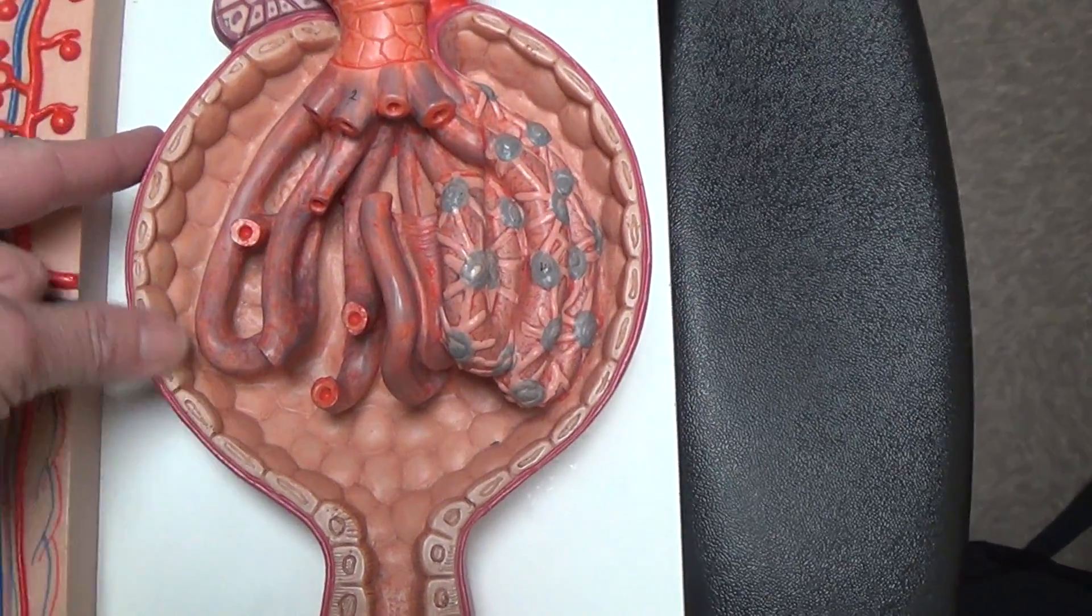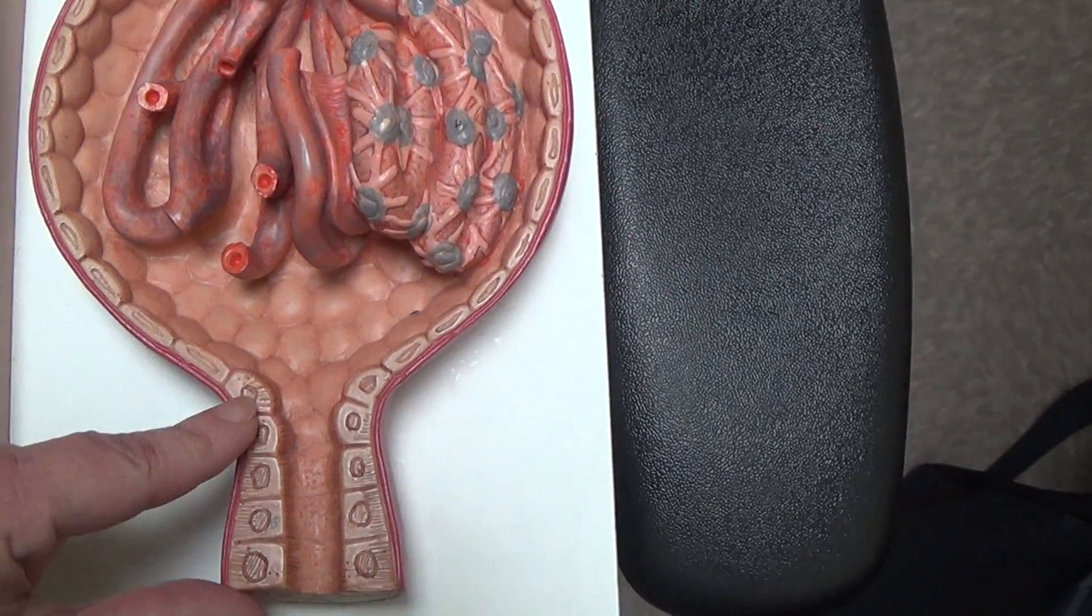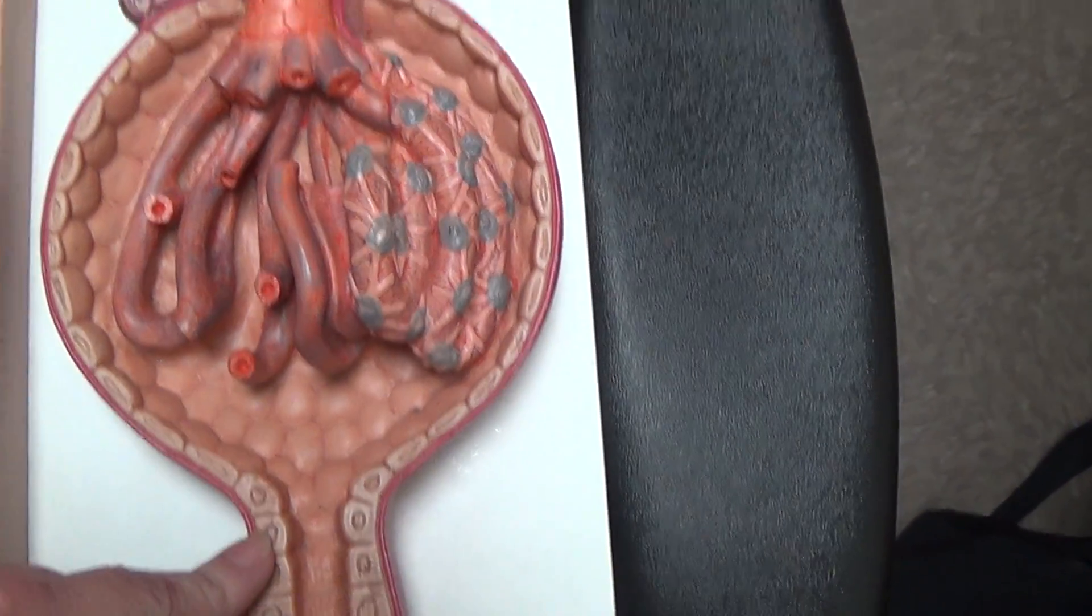So the cell type here is simple squamous and down in the proximal convoluted tubule we move to simple cuboidal tissue.